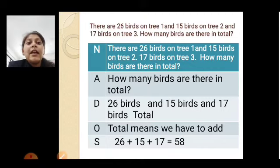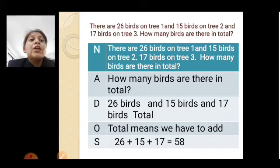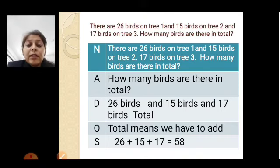See. Another example. There are twenty-six birds on tree one, fifteen birds on tree two, and seventeen birds on tree three. Here there are three trees. Different numbers of birds are sitting on them. So, how many birds are there in total? So, first twenty-six, fifteen and seventeen birds are there. Now, what's the keyword? Total.